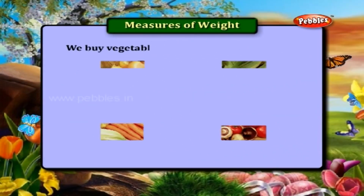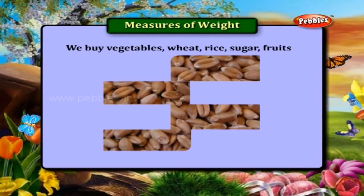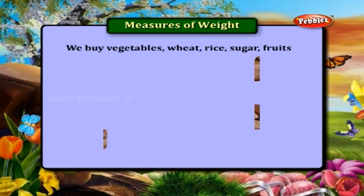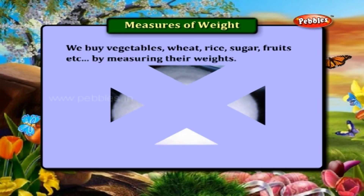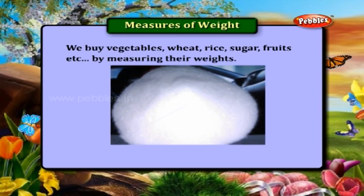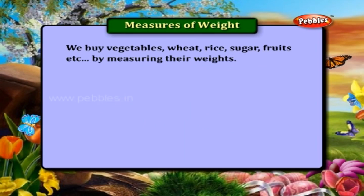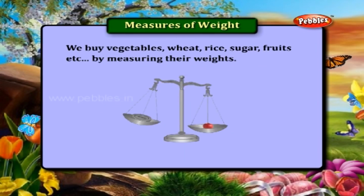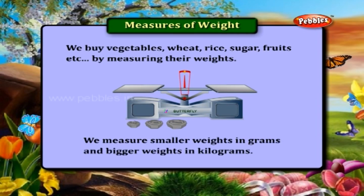We buy vegetables, wheat, rice, sugar, fruits, etc. by measuring their weights. We measure smaller weights in grams and bigger weights in kilograms.